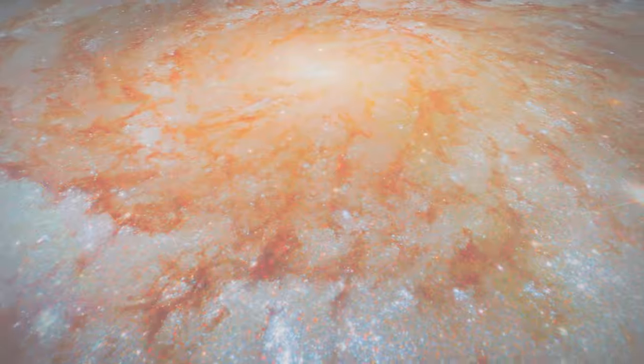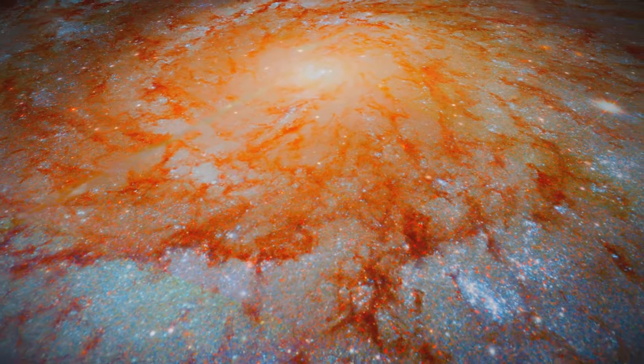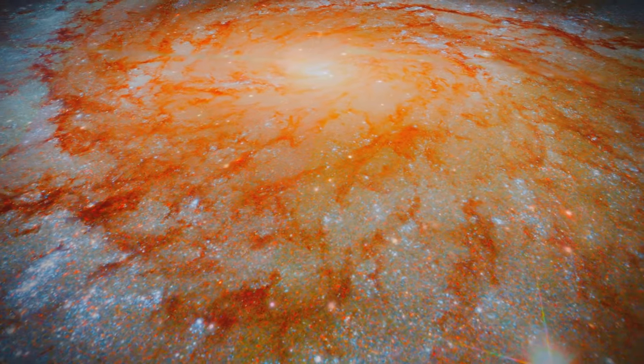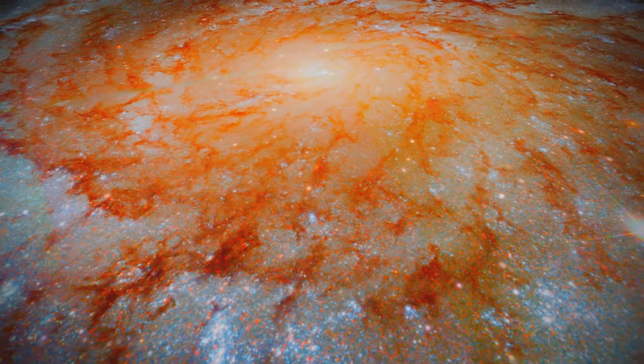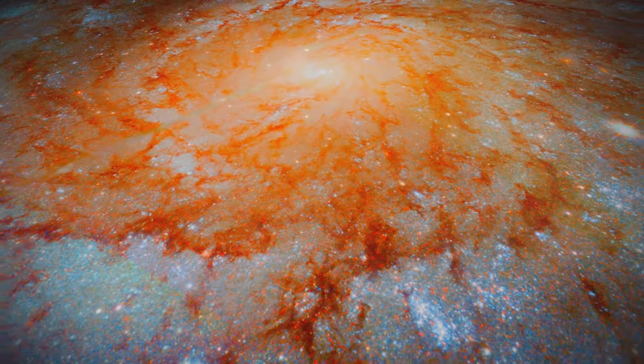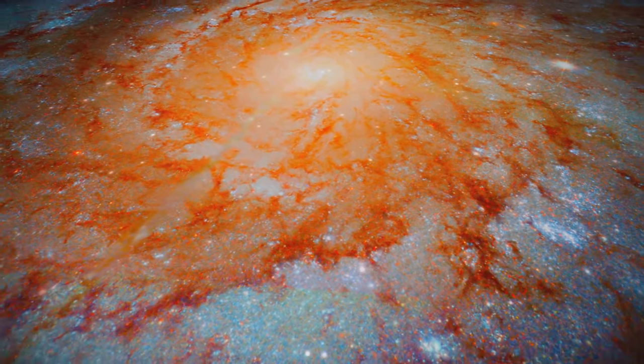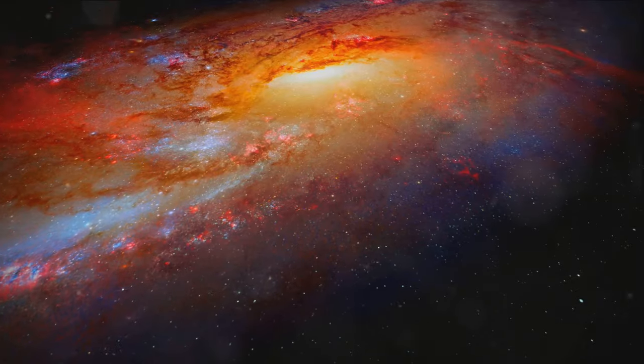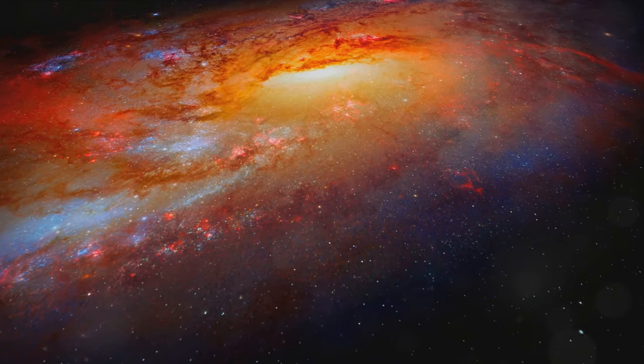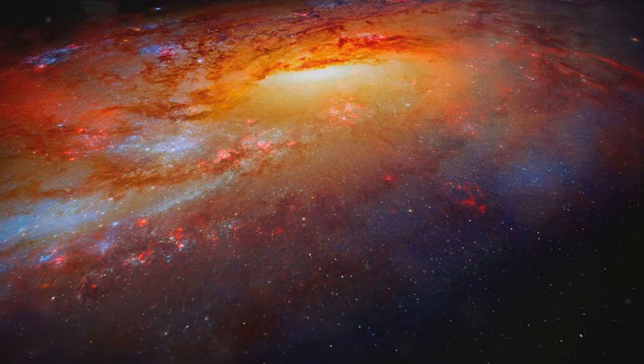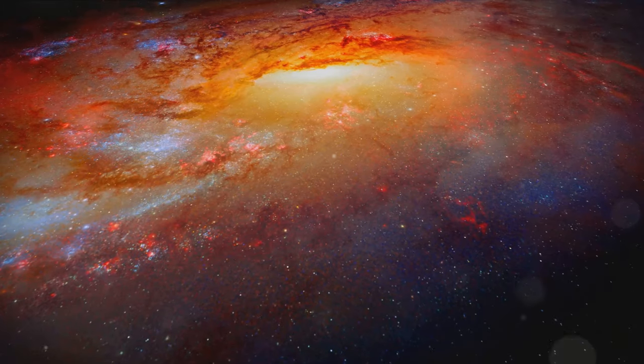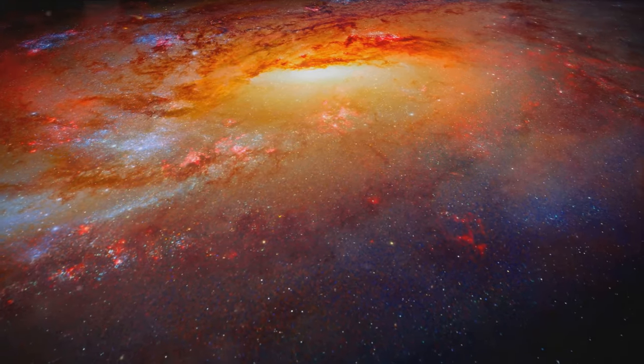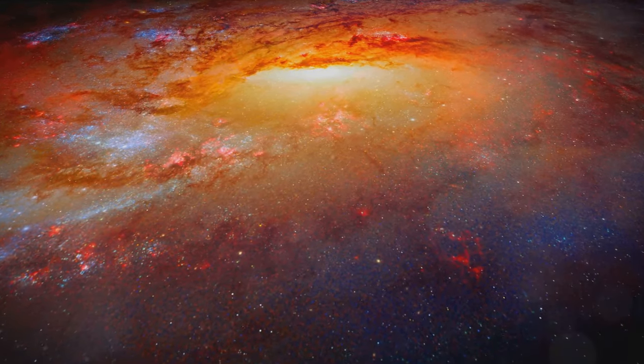The Sombrero Galaxy, a spectacular sight in the universe, got its name from its unique structure. From our vantage point here on Earth, we see the Sombrero Galaxy majestically tipped to its side, presenting a profile view that appears on our telescopes as a luminous white core encircled by thick, dark dust lanes. These lanes form a sprawling circular ring that surrounds the galaxy's bright nucleus, somewhat like the brim of a hat.